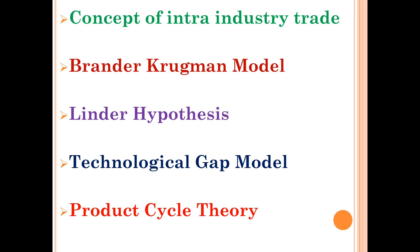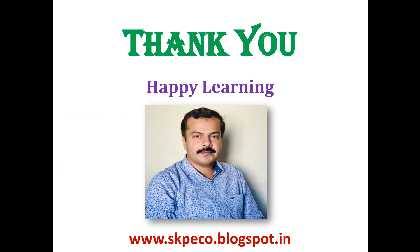In this video, we have examined the concept of intra-industry trade — that is, countries trade differentiated products, exporting and importing items in the same product classification category. Two models dealing with intra-industry trade: the Brander-Krugman model and the Linder hypothesis. Two theories — the technological gap model and product cycle theory — relax the H-O assumption that same technology is available everywhere, saying there is a delay in the diffusion or transmission of technologies across countries. You can always visit our blog skpeco.blogspot.in for additional notes and information.